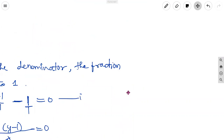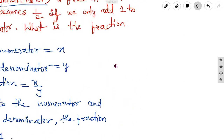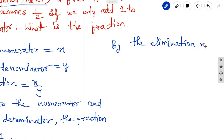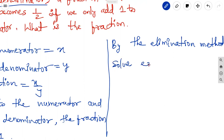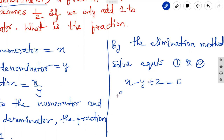The two equations are: equation 1 is x minus y plus 2 equal to 0, and equation 2 is 2x minus y minus 1 equal to 0. These two equations are solved by the method of elimination.